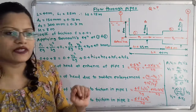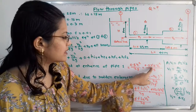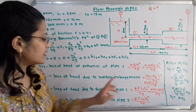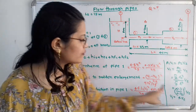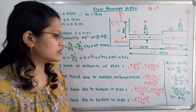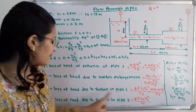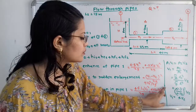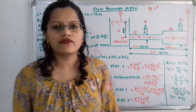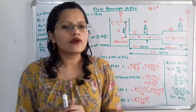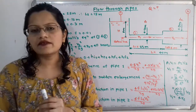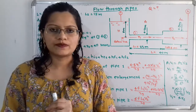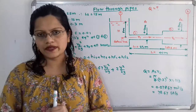Substituting V1 = 4V2 into each loss term: HI1 = 0.5 × (4V2)² / 2g = 0.5 × 16 V2²/2g = 8 V2²/2g. HE1 = (4V2 − V2)²/2g = (3V2)²/2g = 9V2²/2g. For HF1, substituting V1 = 4V2 gives 4FL1 × 16V2²/2g. HF2 is already in terms of V2. Now all losses are expressed in terms of V2²/2g.